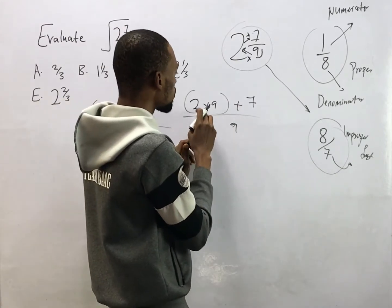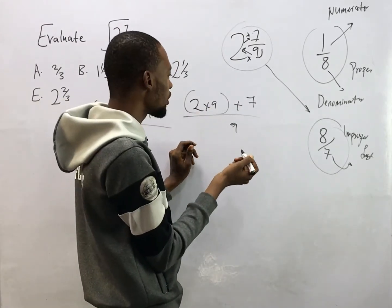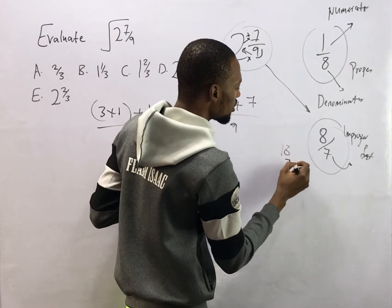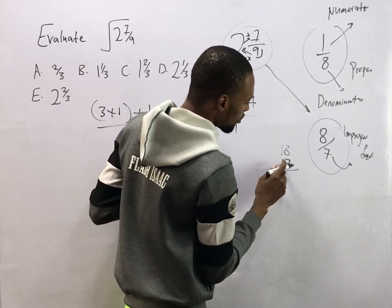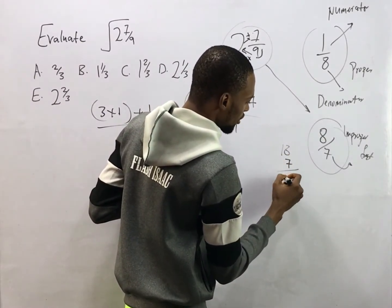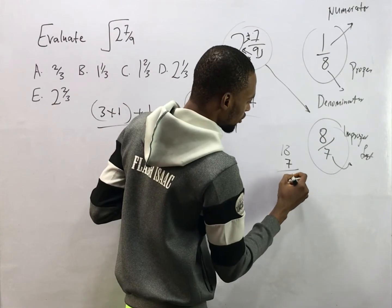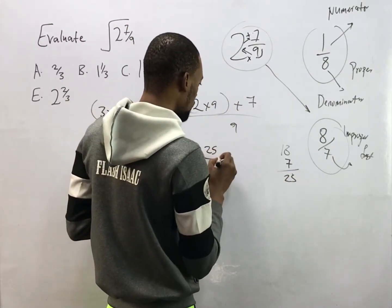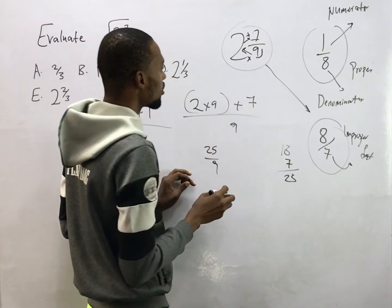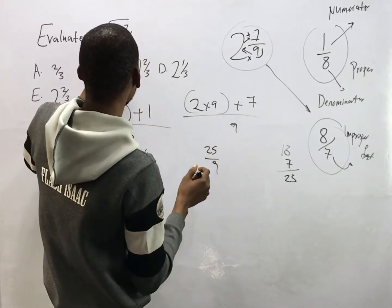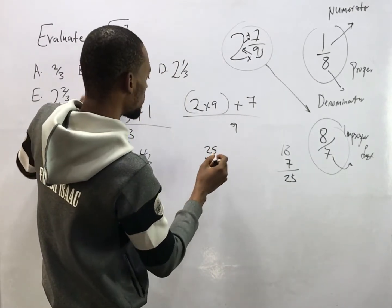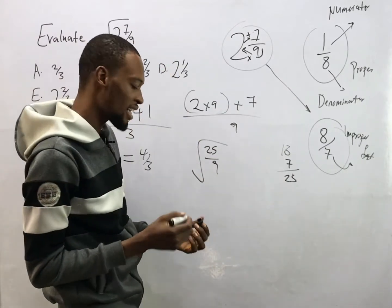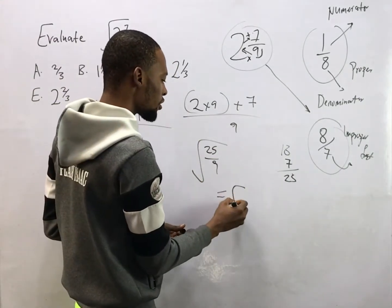Now converting 2 whole number 7 over 9: 2 times 9 gives you 18. Then 18 plus 7 gives you 25. So here it is 25 over 9. Remember it is in square roots, so we have converted this to the improper fraction 25 over 9.